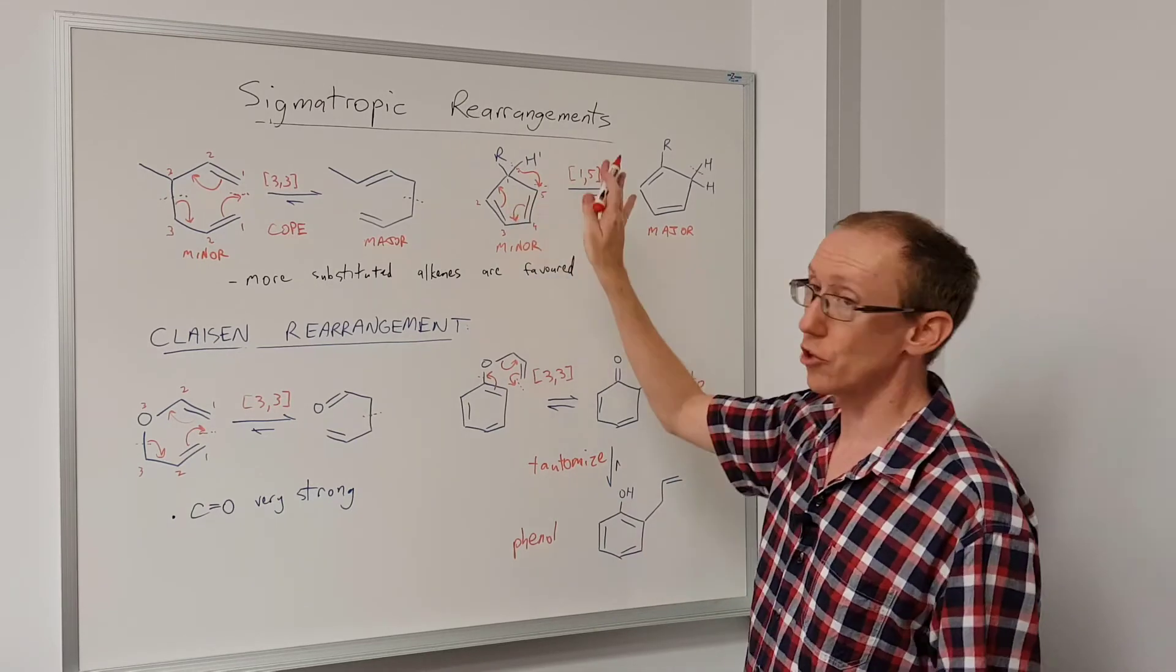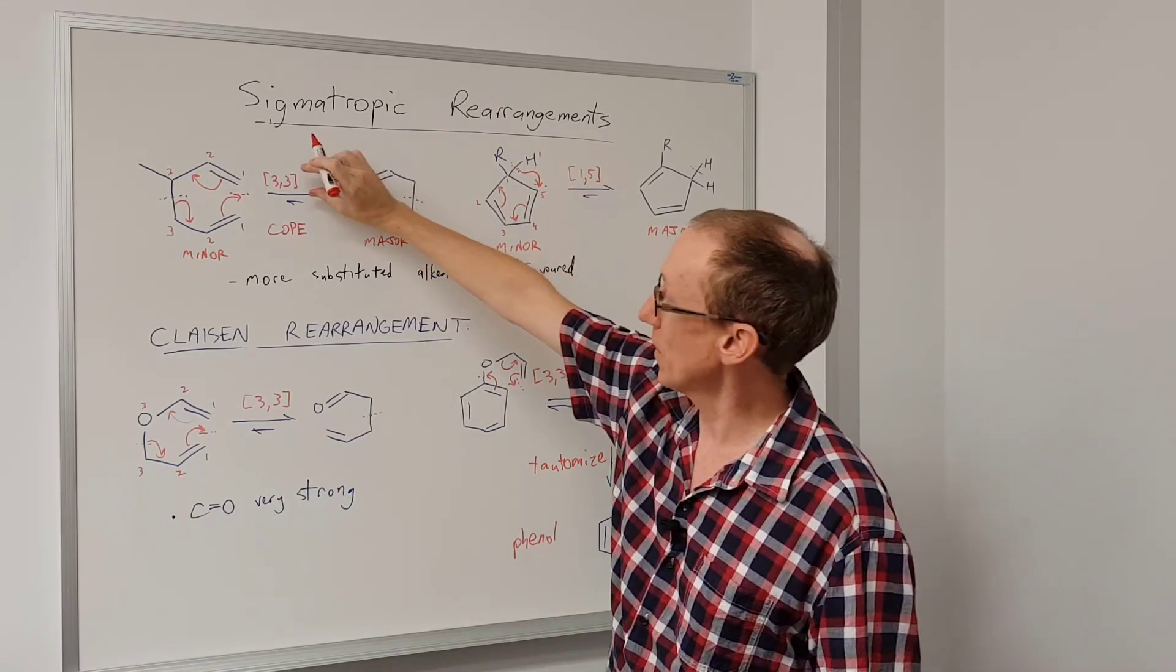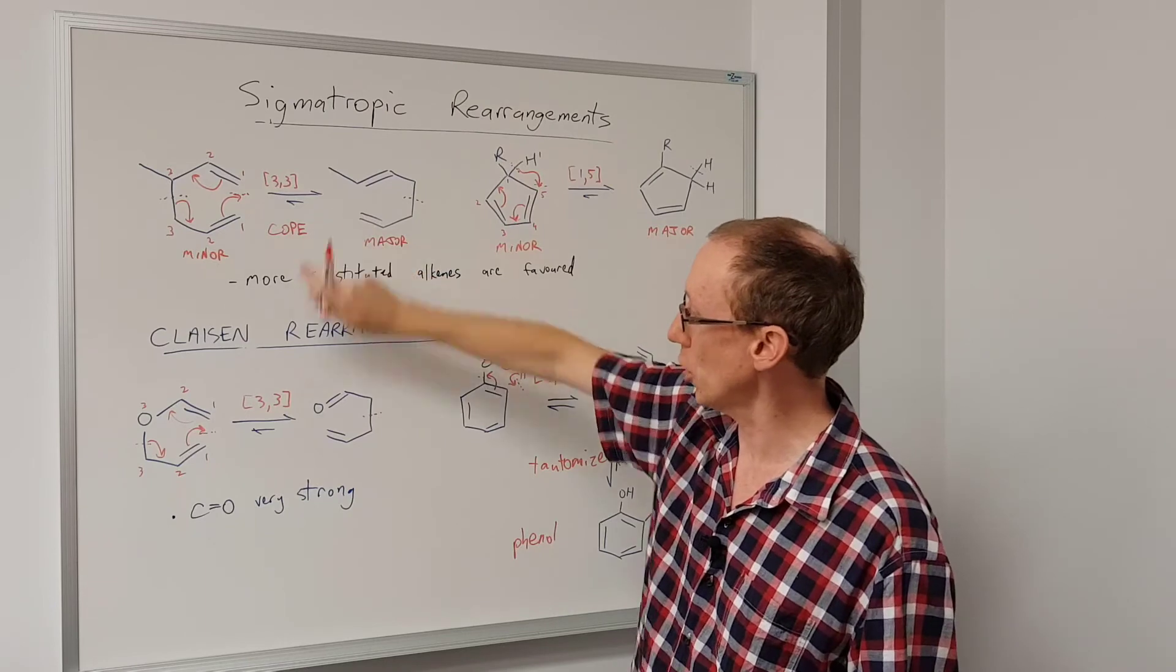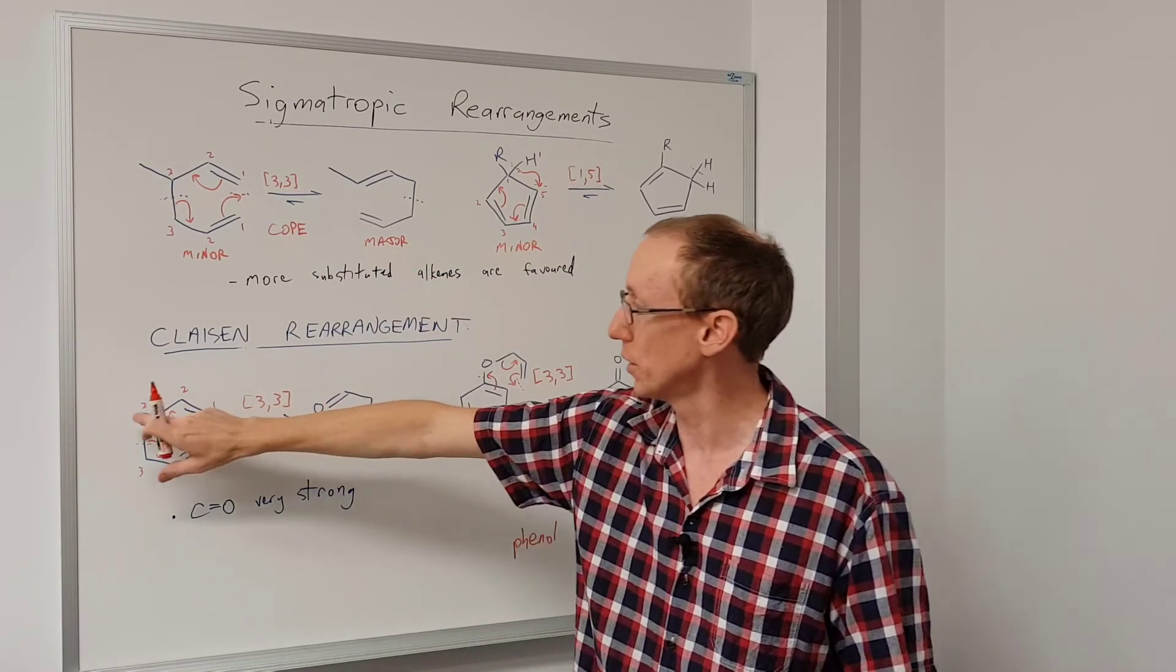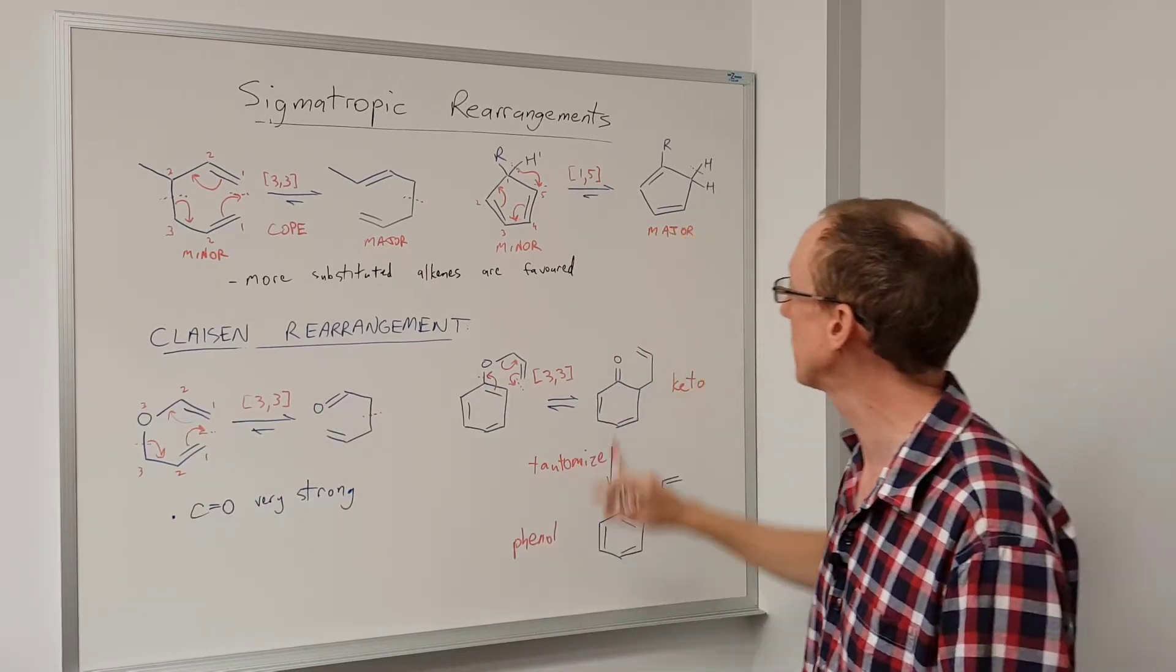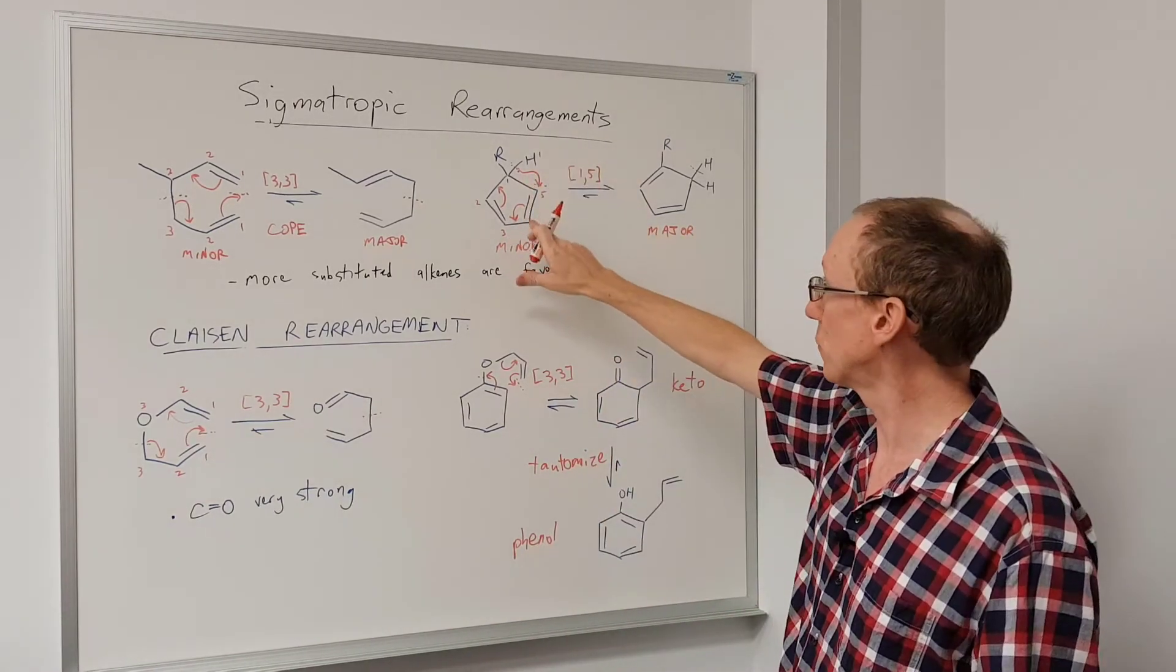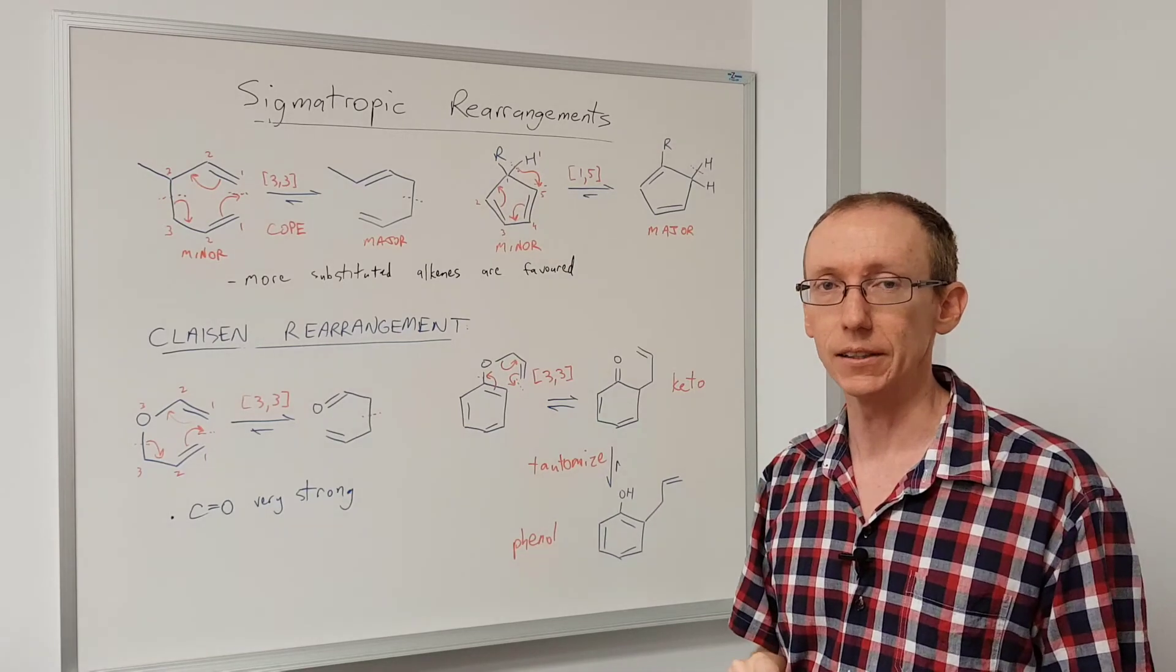So that's sigmatropic rearrangements, how to number them, and a couple of most important variants. The Cope rearrangement, 3,3 sigmatropic rearrangement including oxygen, which is called the Claisen rearrangement, and 1,5 hydride shifts, which is particularly important in cyclopentadienes.